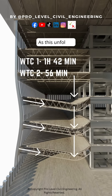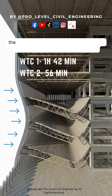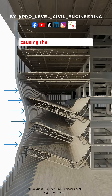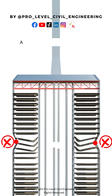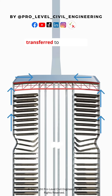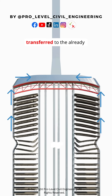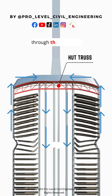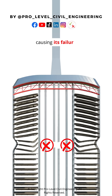As this unfolded, the sturdy perimeter columns carrying the loads started to pull and bow inward, causing the columns to buckle. As the perimeter columns failed, the loads were instantaneously transferred to the already weakened core through the hat truss, causing its failure.